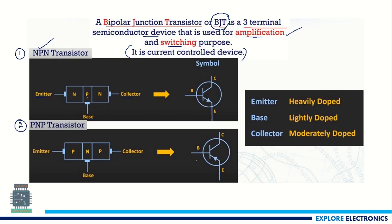The in-between region is called the base and the other two are named as emitter and collector. In an NPN transistor we have emitter of N type and collector of N type with P sandwiched in between. Similarly in PNP, N is sandwiched between the two P regions. The emitter region is heavily doped, base region is lightly doped, and collector region is moderately doped.